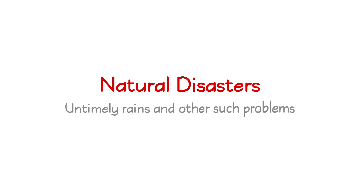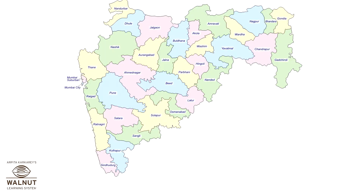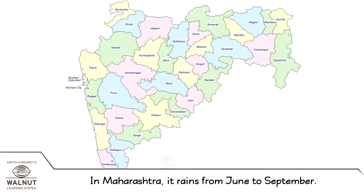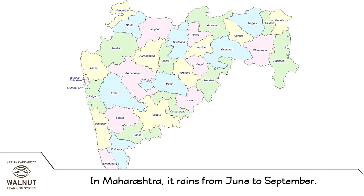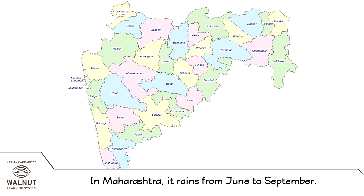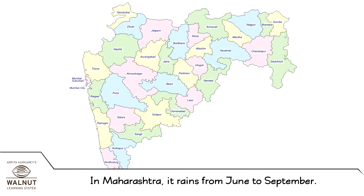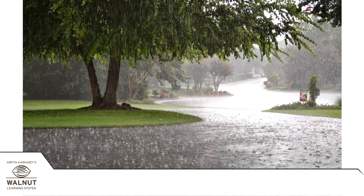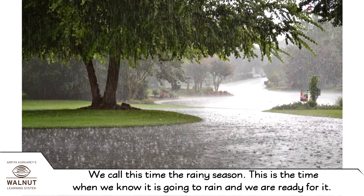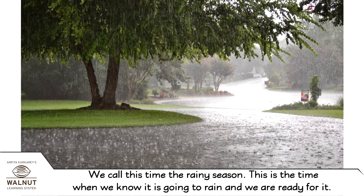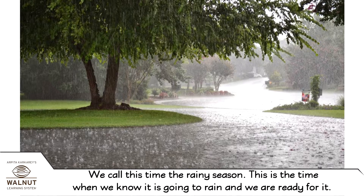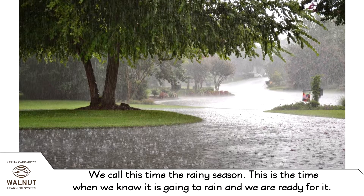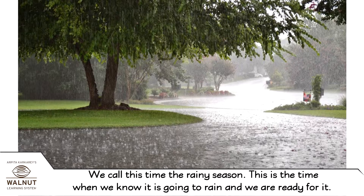Natural disasters, untimely rains, and other such problems. In Maharashtra, it rains from June to September. We call this time the rainy season. This is the time when we know it is going to rain and we are ready for it.